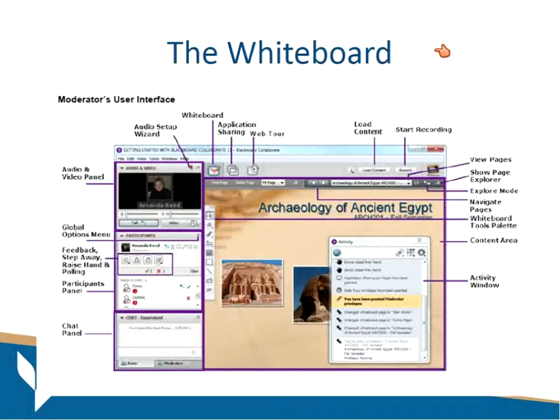The whiteboard area is this area here that I'm clicking on — it's this white area where my PowerPoint presentation is, and it is actually a great place to put PowerPoint presentations and content. This is the communication tab up here, and the whiteboard button is located in the upper left-hand corner of your screen. As a participant, that whiteboard button is grayed out. For me, the moderator, it is not grayed out — I have access to it because I am the moderator.